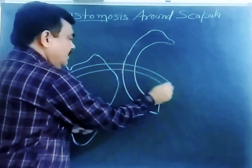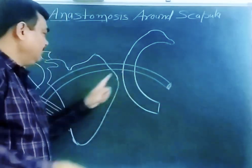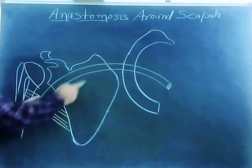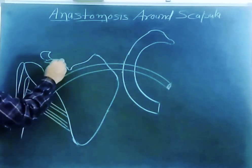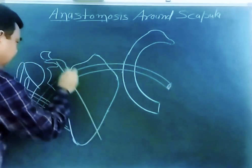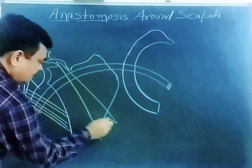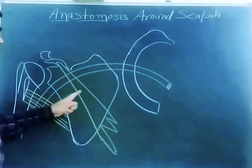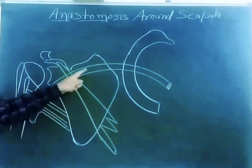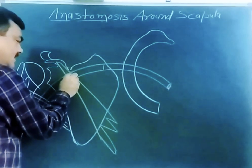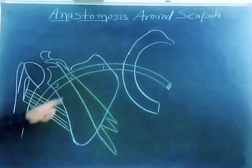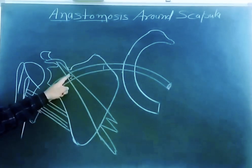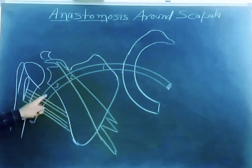From here to here this is the subclavian artery, and from the outer border of the first rib to the lower border of teres major this is the axillary artery. The axillary artery is divided into three parts by pectoralis minor — the first part is proximal to pectoralis minor, the second part is deep to pectoralis minor, and the third part is distal to pectoralis minor.